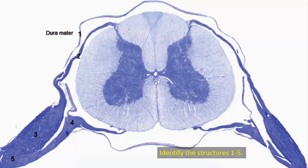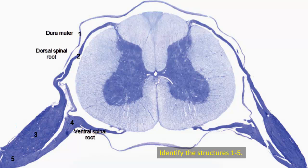You can see the posterior root of a spinal nerve, labeled 2, which is attached to the posterolateral sulcus of the spinal cord. And also you can see an anterior root of a spinal nerve, labeled 4, attached to the anterolateral sulcus.